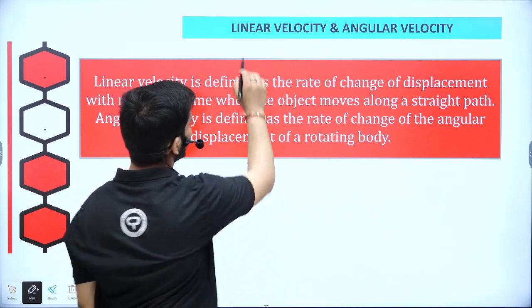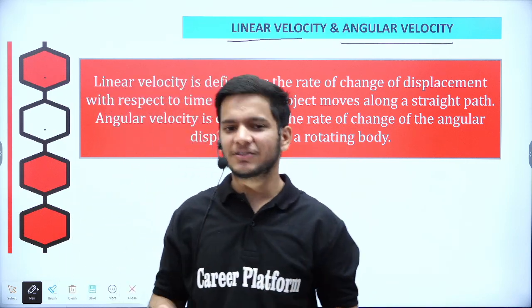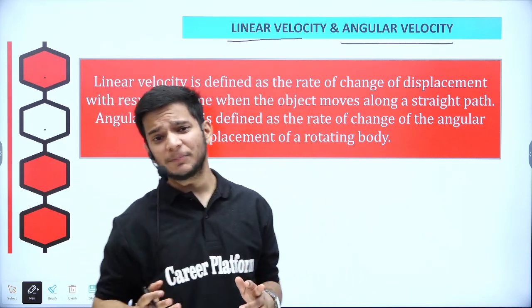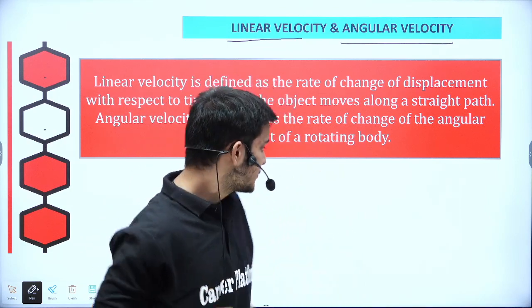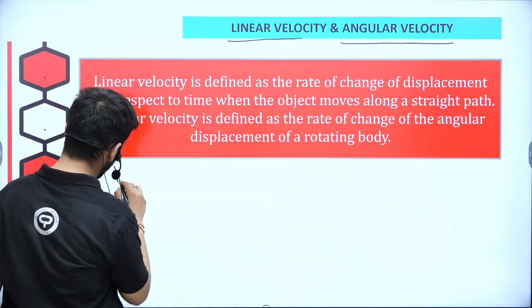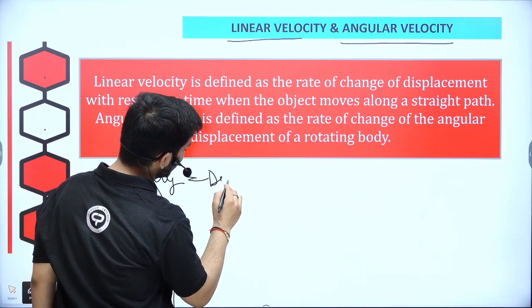So guys, let's discuss what is linear velocity and what is angular velocity. Let's discuss what is velocity. What is distance upon time? No, it is speed. What is velocity? Displacement upon time. So velocity is displacement upon time.